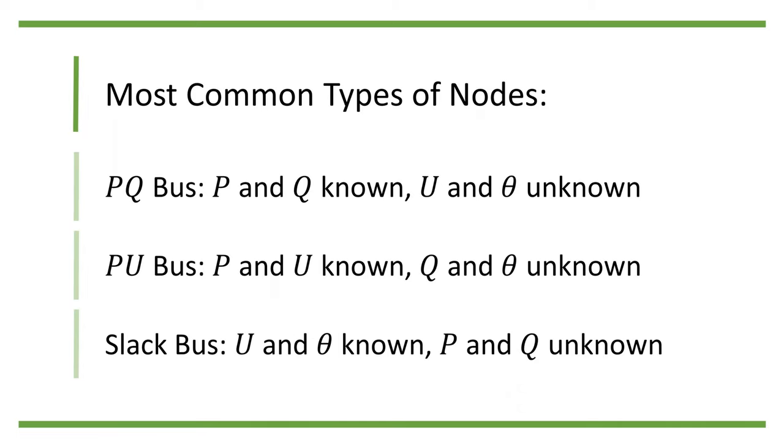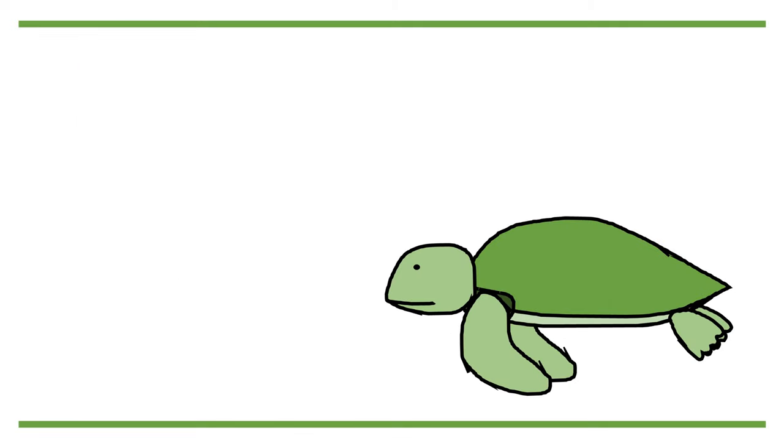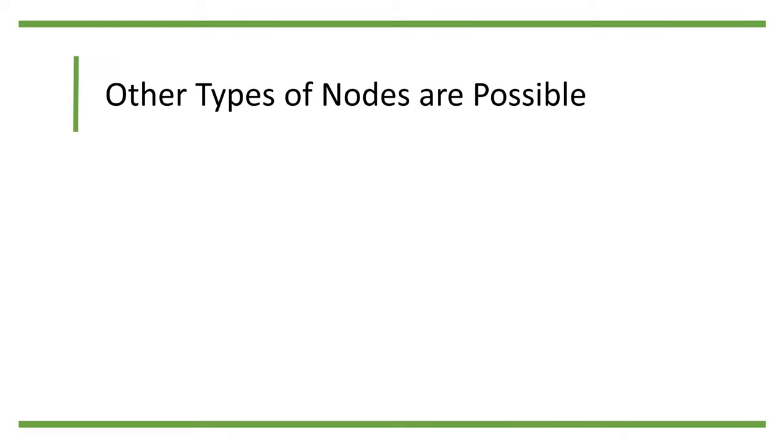Slack bus: at this type of node, the magnitude and phase angle of voltage are known. The real and reactive power are unknown, but it is not relevant. Note that while these are the most common types of nodes, other types of nodes do exist.